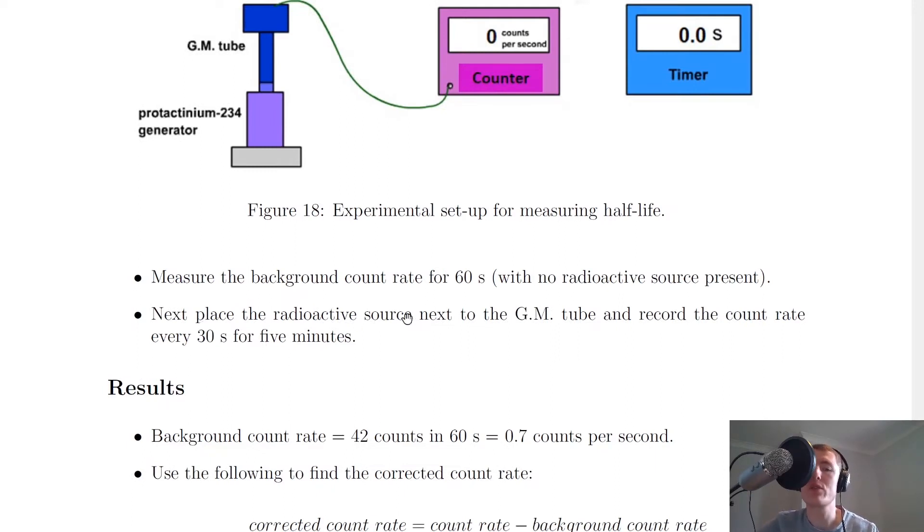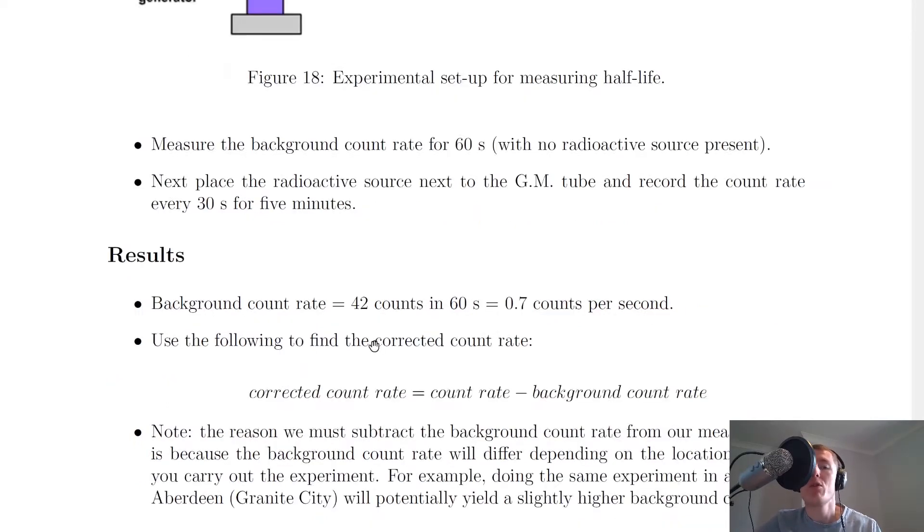It then says to place the radioactive source next to the Geiger-Müller tube and record the count rate every 30 seconds for five minutes. Now this is just an example but you could do it every five seconds or every 10 seconds if you wanted to and you might not have to do it for as long as five minutes.